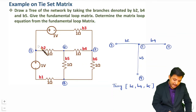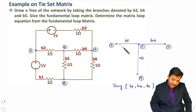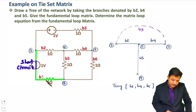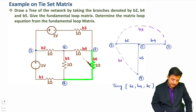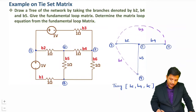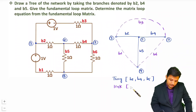The remaining branches are links, and those should be drawn by dashed lines. B3 is there as a link. B1, which is between nodes 1 and 4, is also a link. B6, which is between nodes 3 and 4, is also a link. So for this graph the links are B1, B3, and B6.